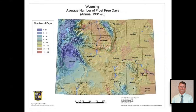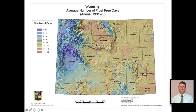Here's another great map providing information on how many frost-free days we can expect. The brighter colors represent more frost-free days and a longer growing season. The western side of the state and certain parts of the southern portion have fewer frost-free days. This key helps identify exactly how many days that might be — looking at Laramie, we're probably not looking at very many days.